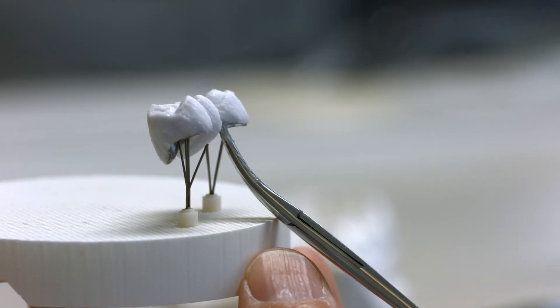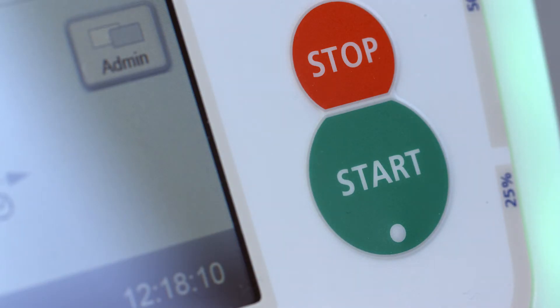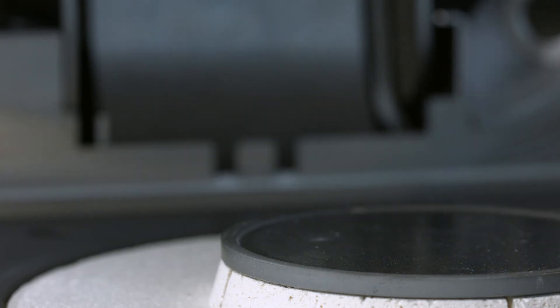Finalize the initial IPS Style Ceram-1 layer with the first firing cycle and the corresponding firing parameters. Remove the firing tray from the firing chamber only once the furnace head is completely opened and the acoustic signal has sounded.